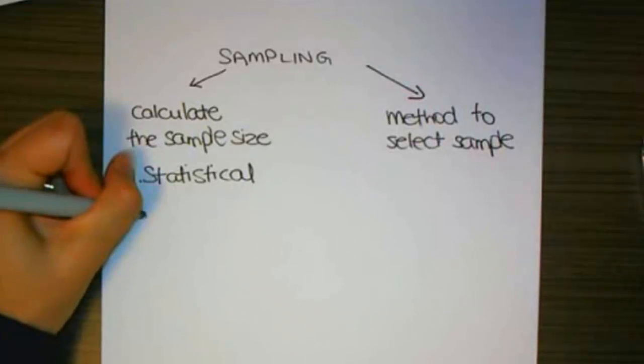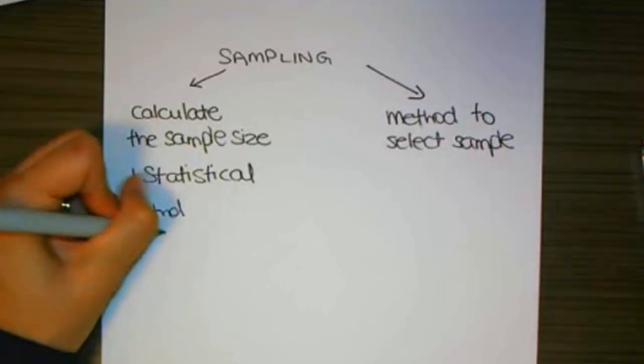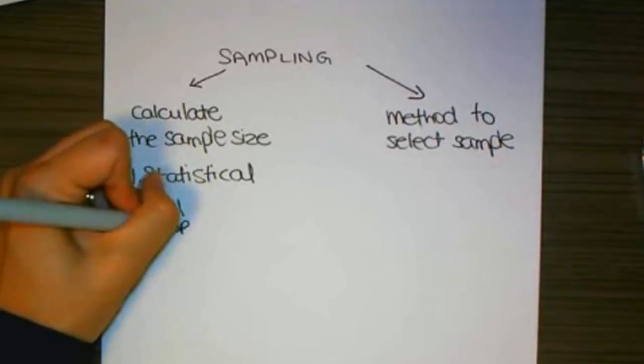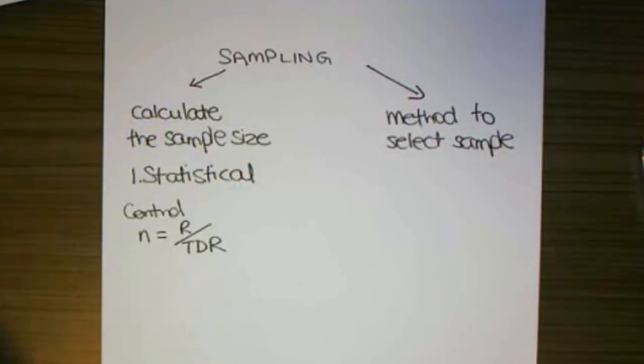So when we do control testing, we use the formula N for sample size equals the reliability factor divided by the tolerable deviation rate. So how many deviations are we willing to allow, places where the control doesn't operate as designed?